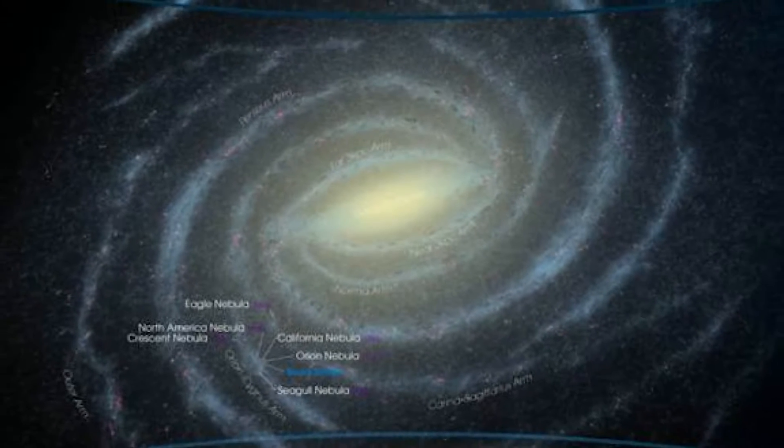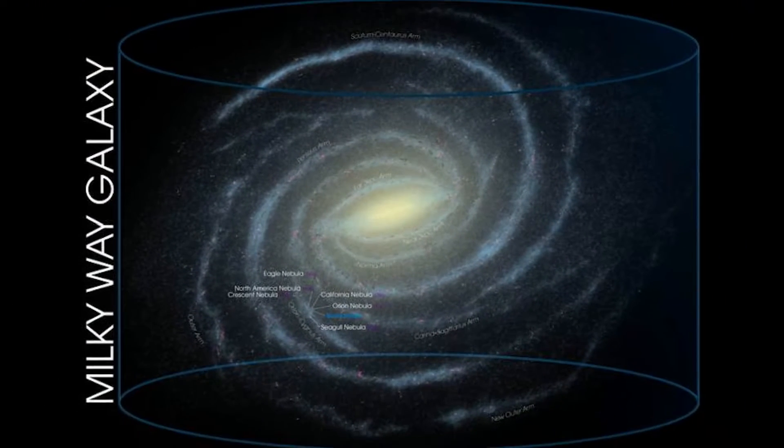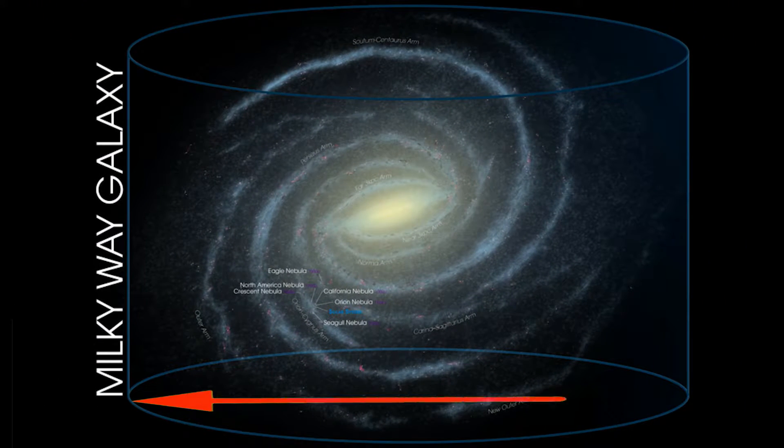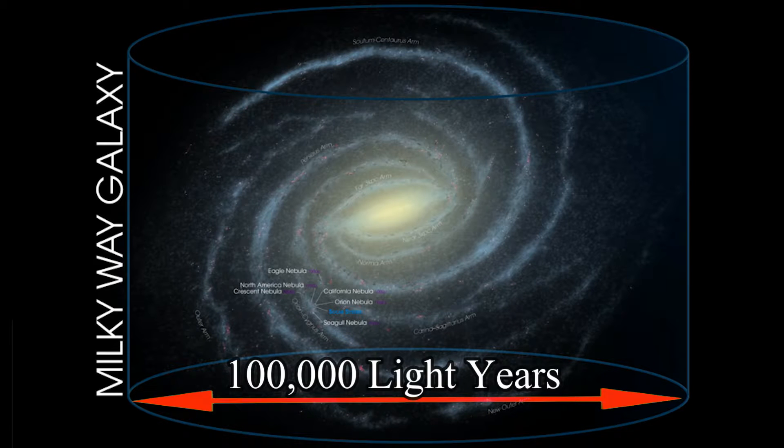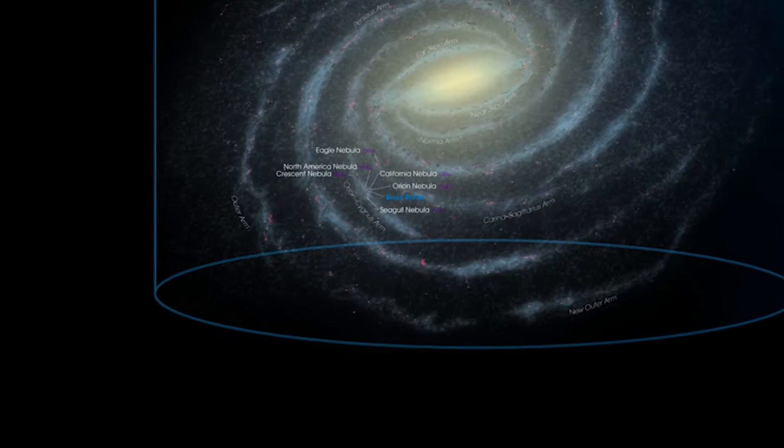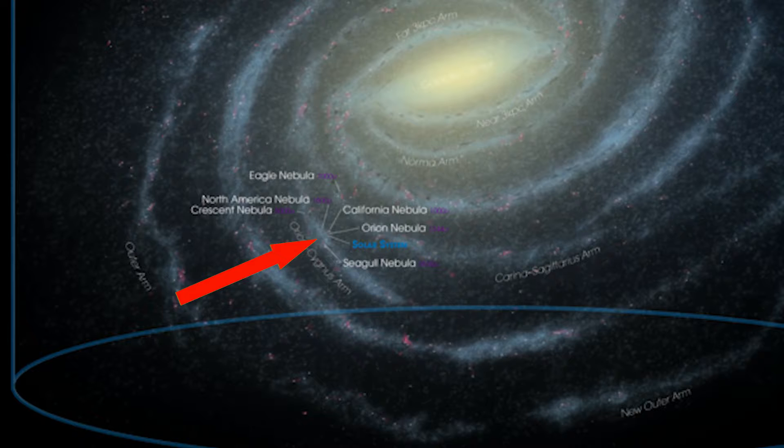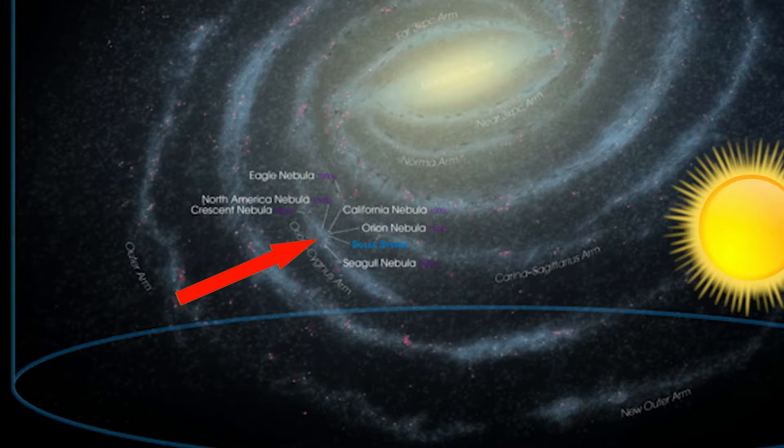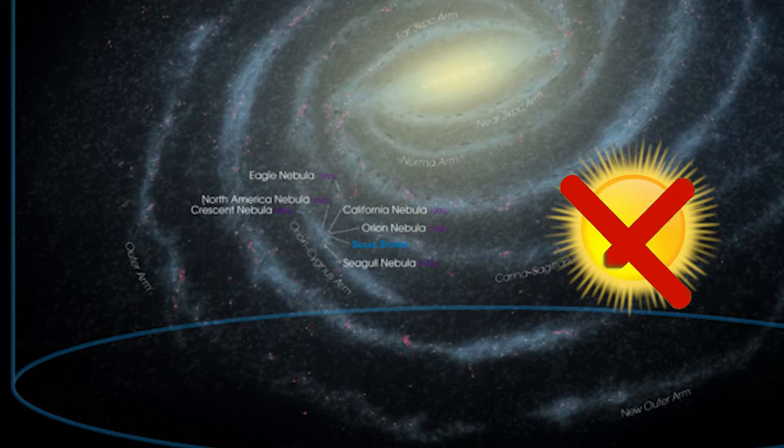Going even further out, we take a look at our very own Milky Way Galaxy, which spans across a total distance of 100,000 light years. As you can see, that tiny dot right there is the solar interstellar neighborhood, of which we are now at the point where you cannot see our Sun anymore.